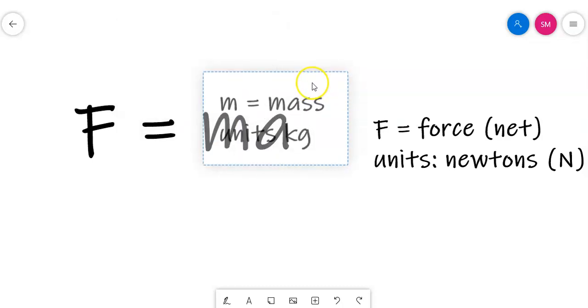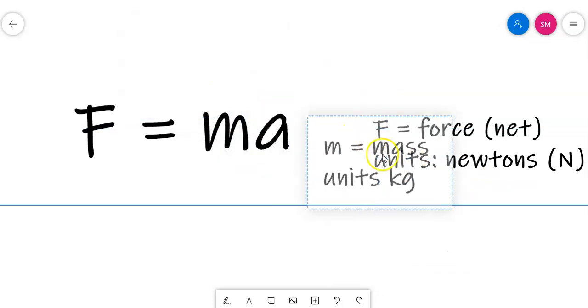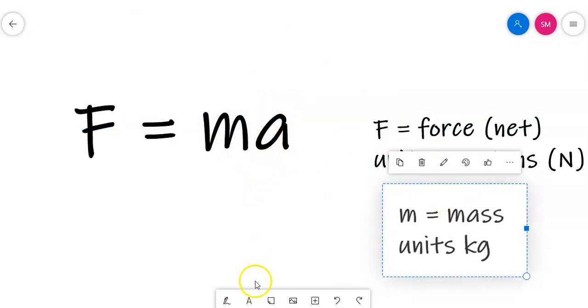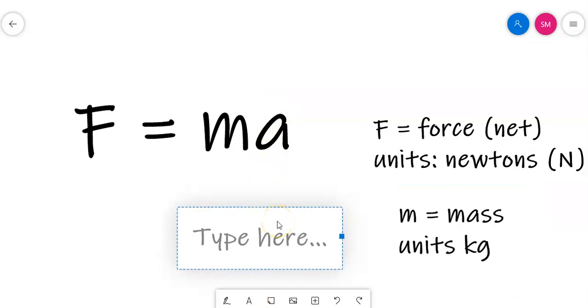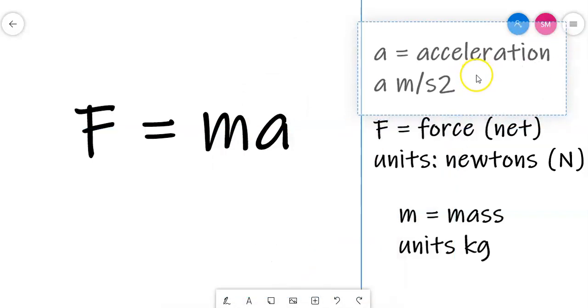And acceleration, so acceleration is always going to be a lowercase a as well. If you come across a capital A later on in the topic, that is talking about area. So it's really important to get the right case for all of your letters. And acceleration is measured in meters per second squared. So that should be a superscript 2.